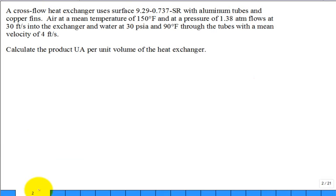Let's solve this problem. You have a cross flow heat exchanger that uses the surface designated 9.29-0737-SR. Engineering probably picked that designation, not marketing. This problem is in your textbook — it's Example 3.1 or 3.2 in this chapter.